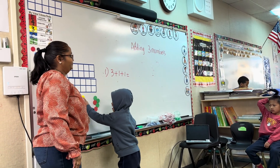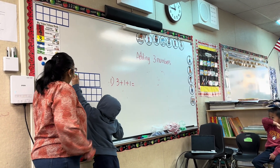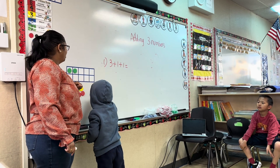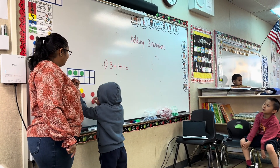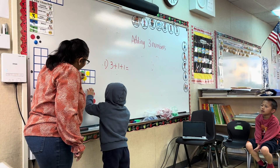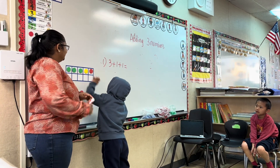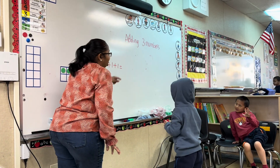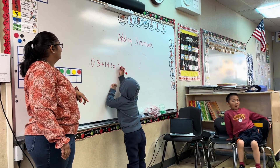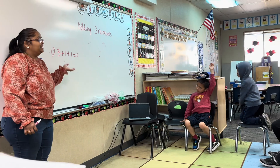Avery, your turn. Do you want to use the tens frame or the Unifix blocks? Tens frame. Good job. Can we put three? Okay, three. And then what other numbers do we have? One. And our third number? One. We can put a different color to show the third number. Can you count them together? One, two, three, four, five. Good job. Avery, can you write number five? Three plus one plus one makes it five. Very nice.